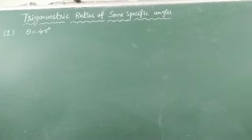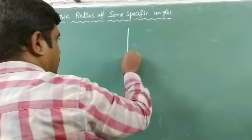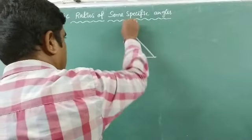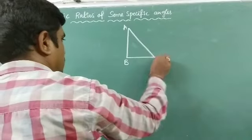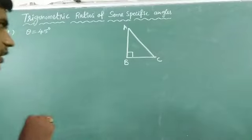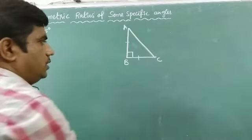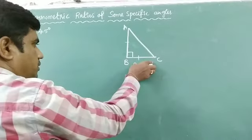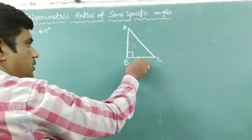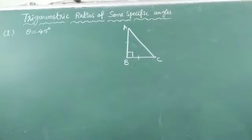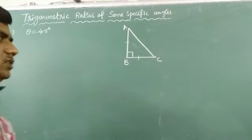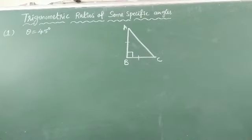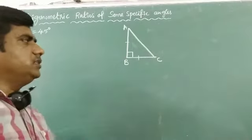When the angle value is 45 degrees, what are the values of the trigonometric ratios? For that, we are considering one right angle isosceles triangle. Here, triangle ABC is both a right angle triangle and an isosceles triangle. If one angle is 90 degrees, it is a right angle triangle, and here two sides are equal — AB length equals BC length — making it an isosceles triangle.